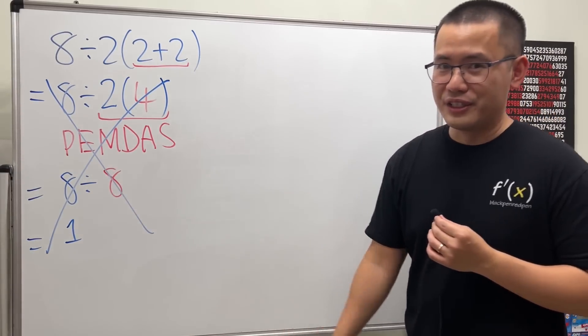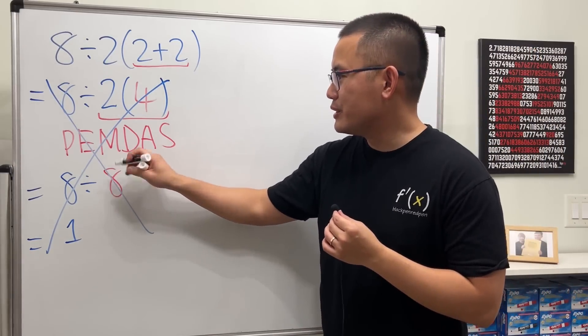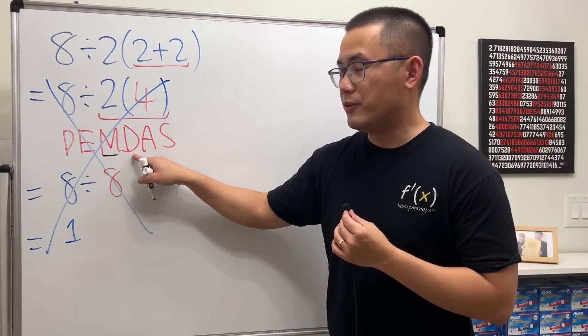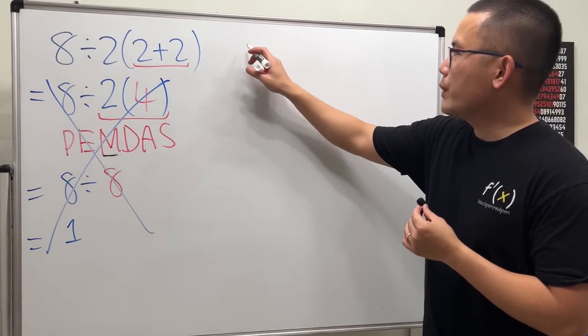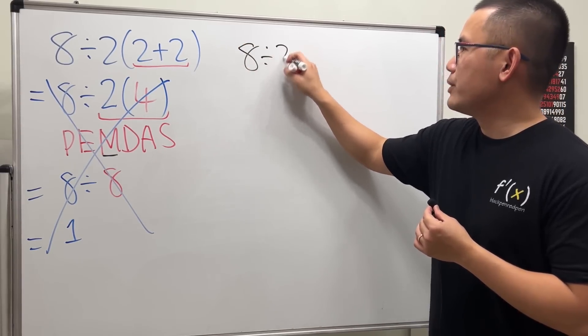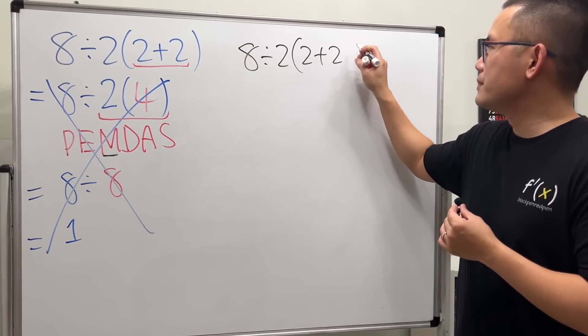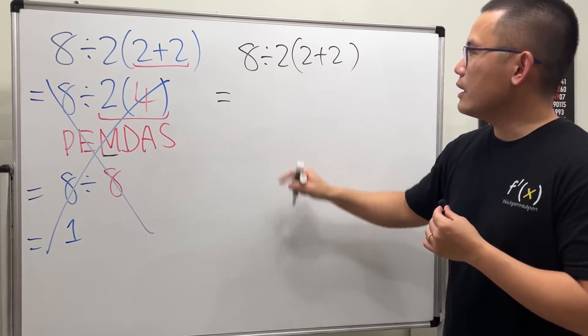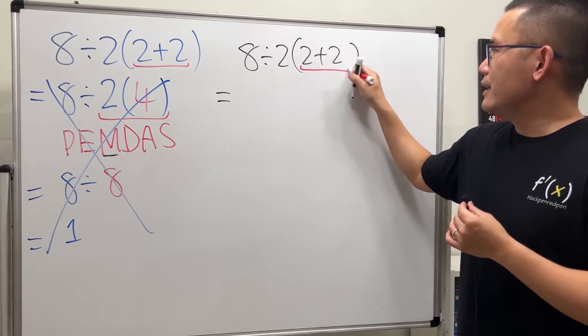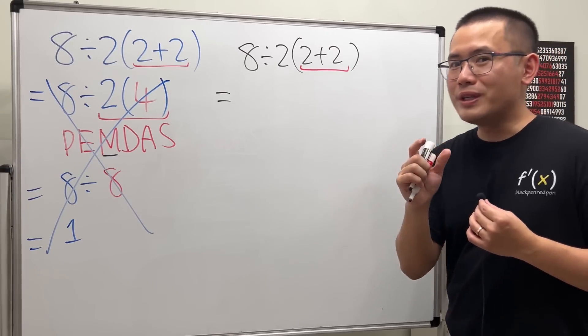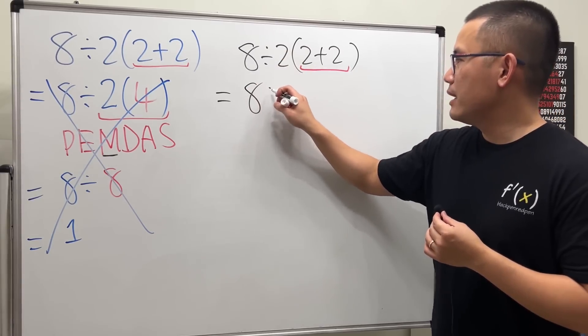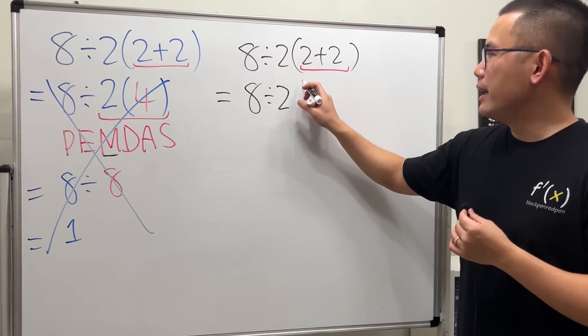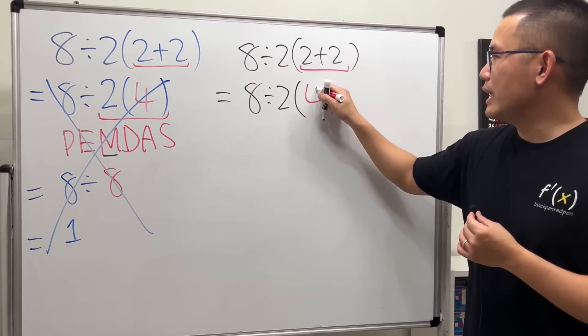This right here, not good, because it does suggest to you that multiplication is before division, which is not true. This is the correct way to do it: 8 divided by 2 parentheses 2 plus 2. Well, again, 2 plus 2 first—you do what's inside of the parentheses first all the time. And then just keep 8 divided by 2, and then the parentheses, and then we have the 4.